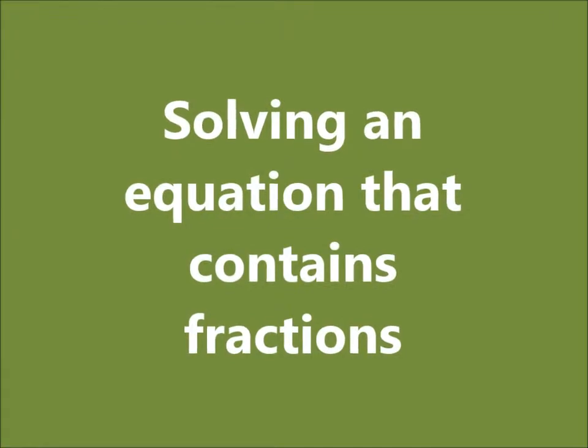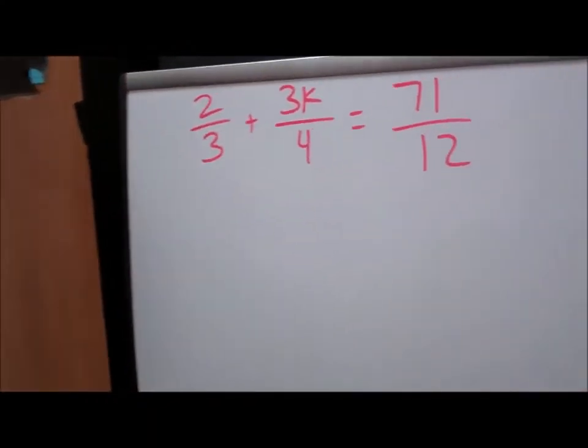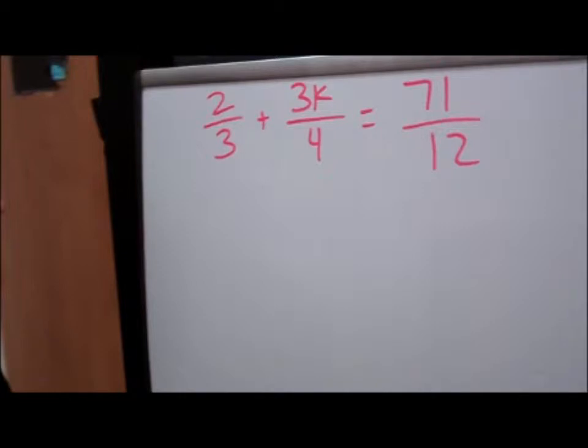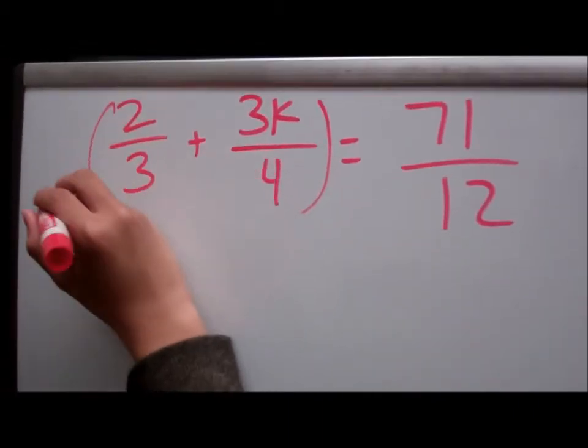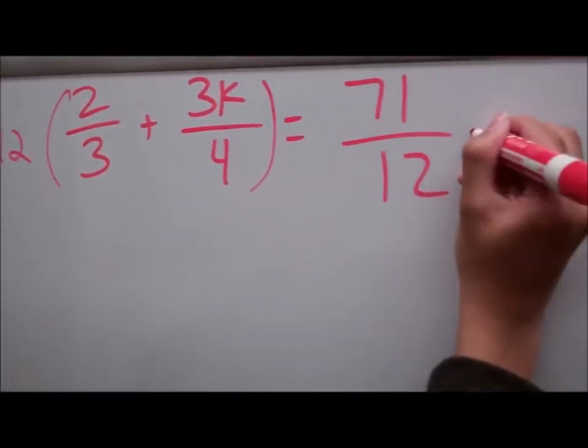Now that we've done that problem, let's try solving an equation that contains fractions. Before we start, let's take a look at our equation. So here we have 2/3 plus 3k/4 equals 71/12. Now, unlike the other steps, we have to find the lowest common denominator. After that, we have to multiply that common denominator to each side of the equation. Now let's see what Dennis is doing.